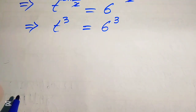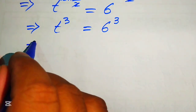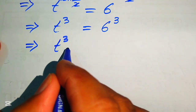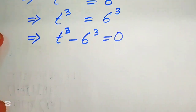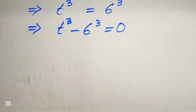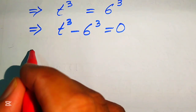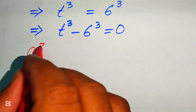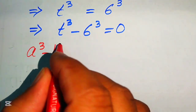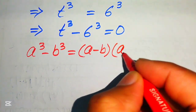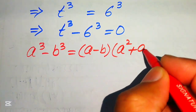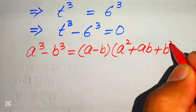Now we move 6 cubed to the left hand side, obtaining t cubed minus 6 cubed equals to 0. After this simplification we have converted our given question into cubic form. We apply the cubic formula: a cubed minus b cubed equals a minus b times a squared plus ab plus b squared.